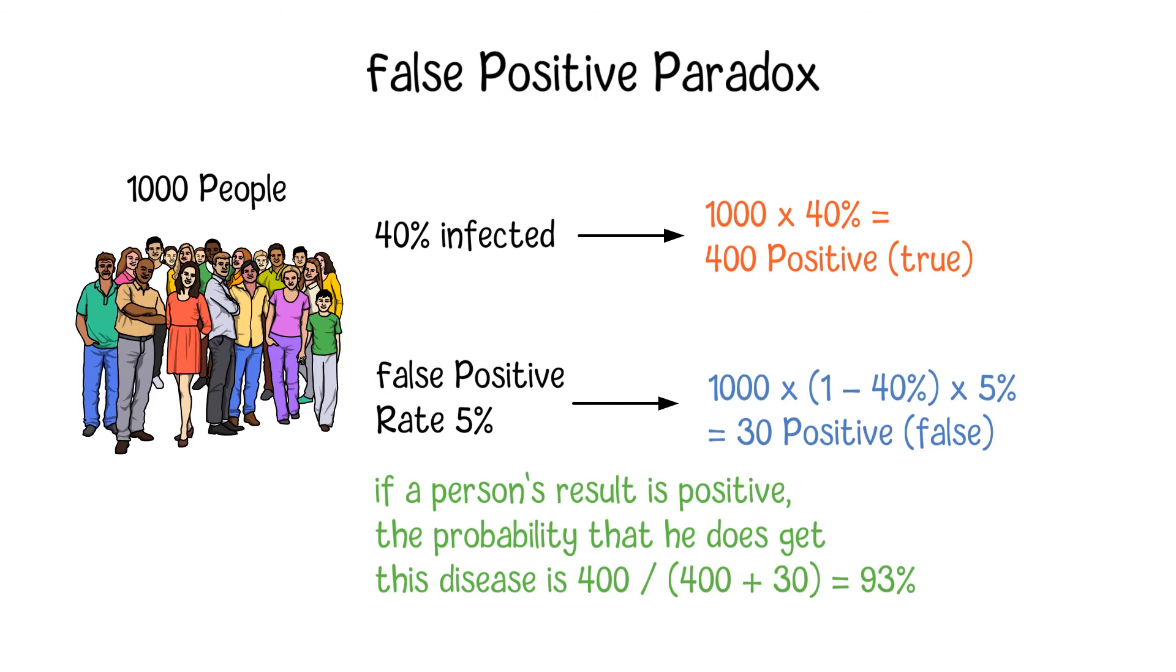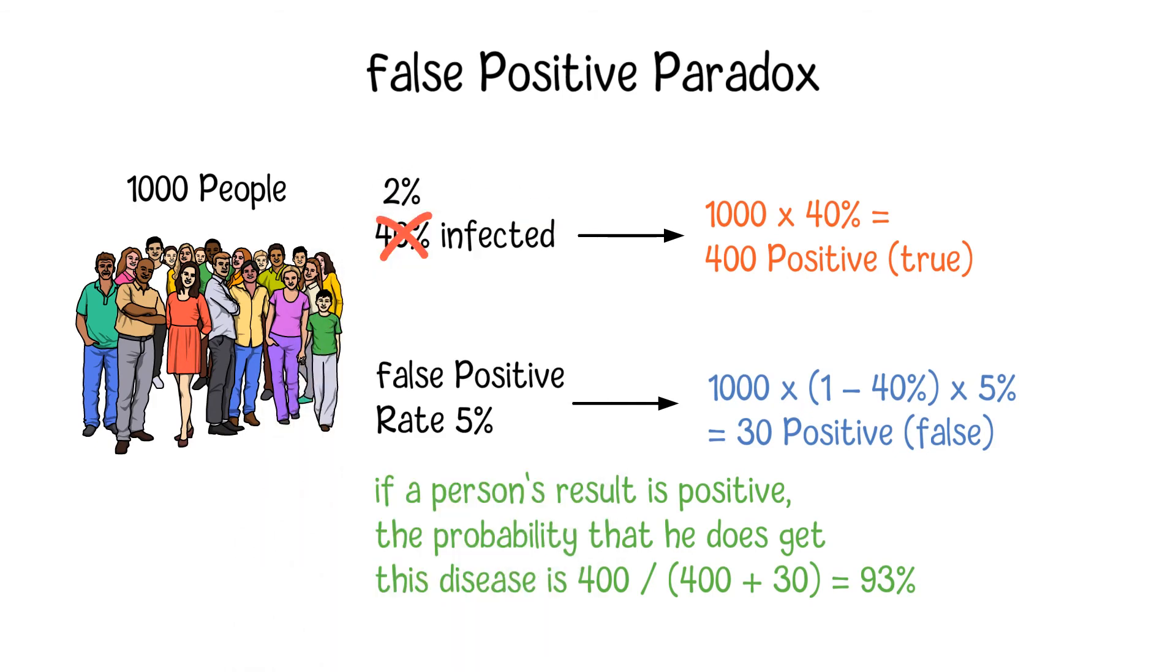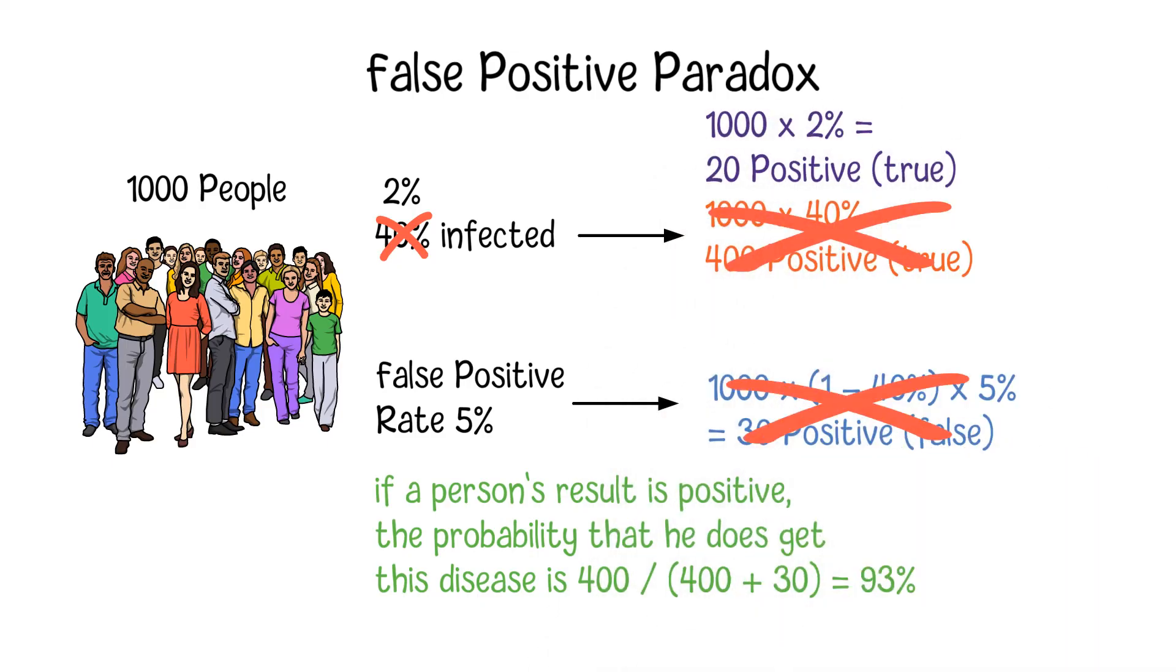Now, let's move to another group of 1,000 people in which only 2% of them are getting infected. So, the real positive number will be 20 and the false positive number will be 49 people. In this group, if a person gets a positive result, there is only a 29% probability that he will get infected.